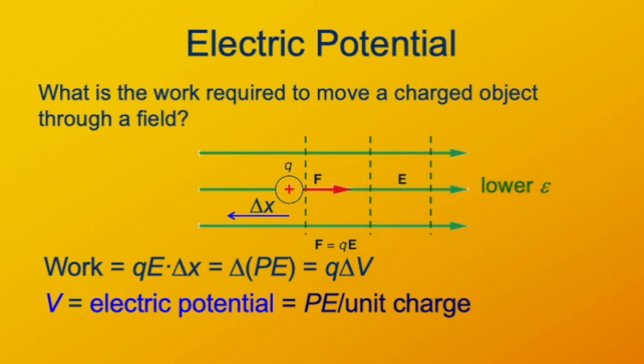Here we're showing dotted green lines showing lines of equal electric potential. There's lower potential on the right and higher potential on the left. A positive charge has a higher potential energy on the left and a lower electric potential energy on the right. It's useful to talk about another non-SI unit of energy that's useful for electrical systems, especially when you're talking about small things, small charges.